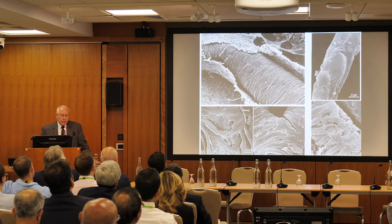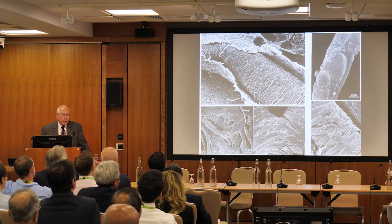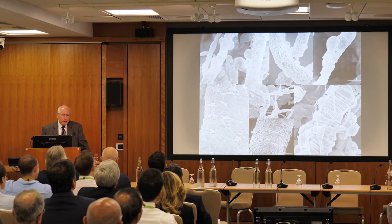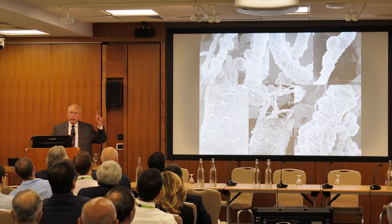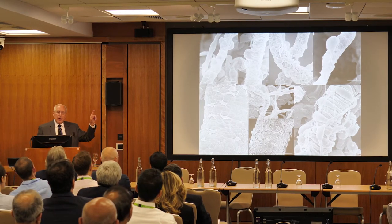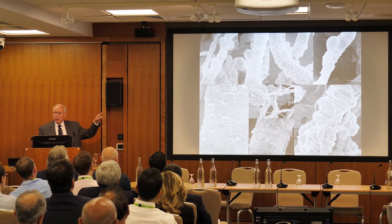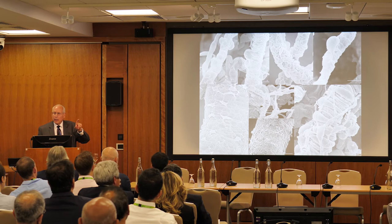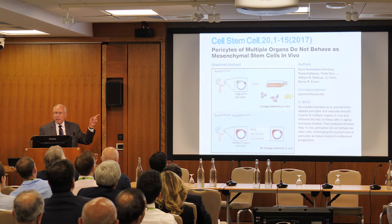Every cell you see is a pericyte, and they're in every single tissue of your body. So when that blood vessel breaks or becomes inflamed, the pericyte becomes an MSC.